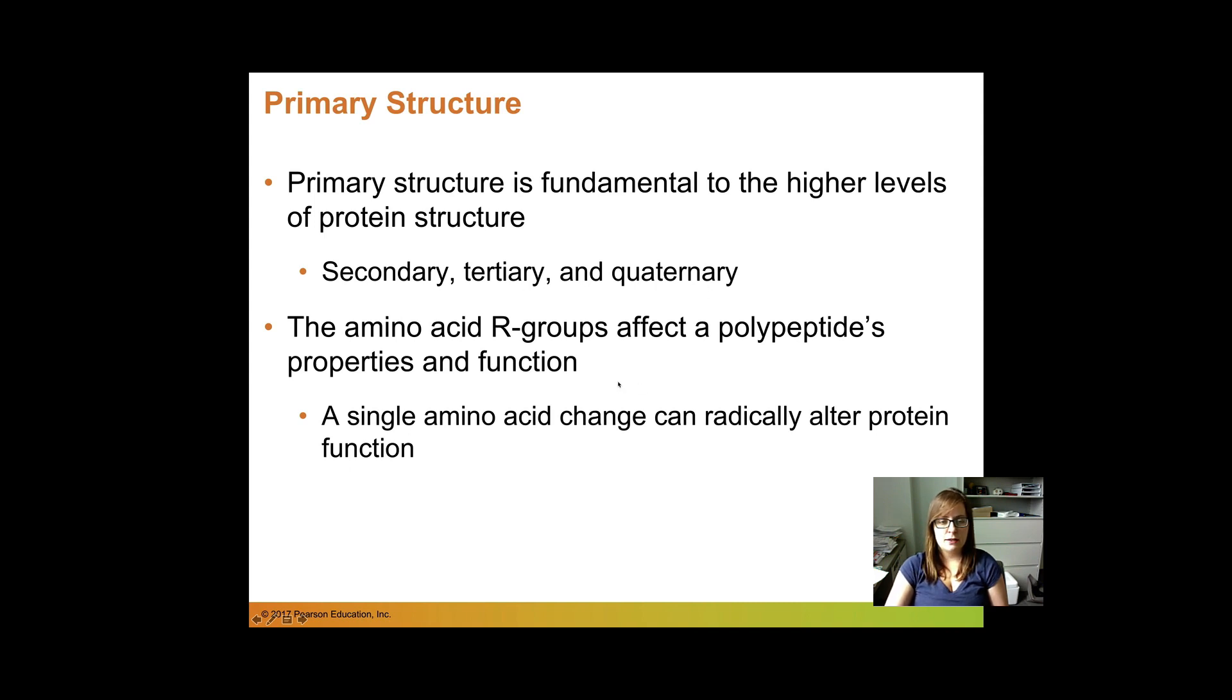The primary structure is essential to the higher levels of protein: secondary, tertiary, and quaternary. And the amino acid R groups affect the properties and function of a protein. So a single amino acid mutation at one site can drastically change the protein's function.